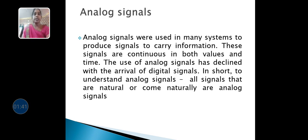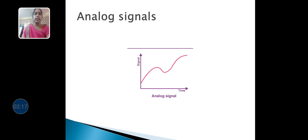Now, we are discussing about two important signals: analog signal and digital signal. Analog signals carry the information in the form of continuous waves. Analog signals were used in many systems to produce signals to carry information. These signals are continuous in both values and time. The use of analog signals has declined with the arrival of digital signals. The analog signal carries information continuously in the form of a continuous wave.